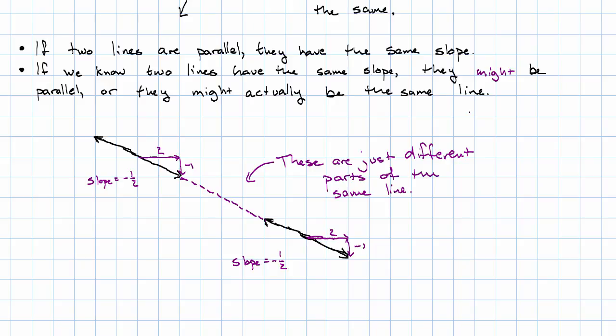If two lines have the same slope, they could be the same line, or they could be parallel.